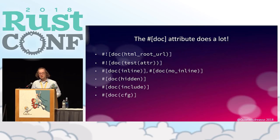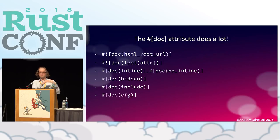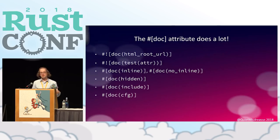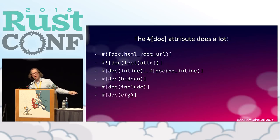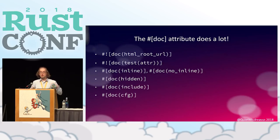`doc(include)` is a relatively recent addition — it's still unstable and needs a feature attribute. What it does is allow you to write your docs in a separate file. If you have a whole lot of docs on one thing, like the standard library does, it kind of blows up your source files with text that's not relevant to the compilation of your code. With `doc(include)`, you say I'm going to write this in a separate file — hey RustDoc, copy-paste that in whenever you run. You can have your documentation in separate files so you can track them separately and they don't get in the way of the code.